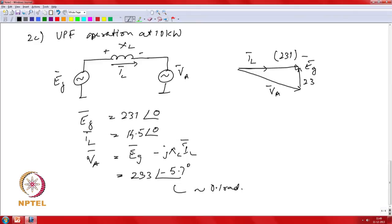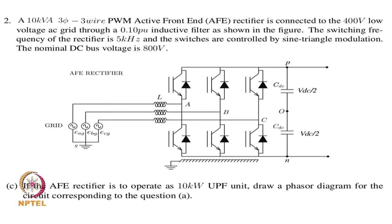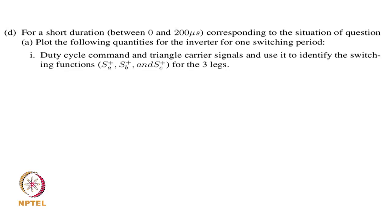This gives us the information about what the voltages at the terminals of the power converter should be when operating at 10 kW. We can use this to find the actual duty cycle commanded to the legs of the power converter. The next question is to determine the duty cycle and plot the switching functions for the first 200 microseconds.